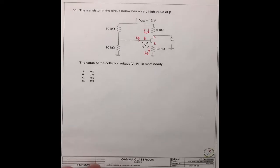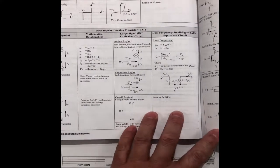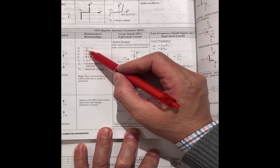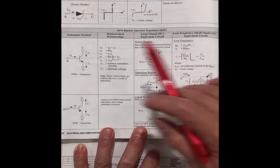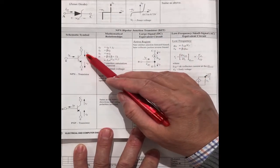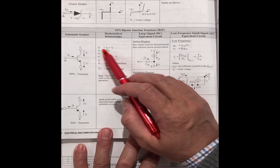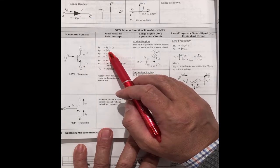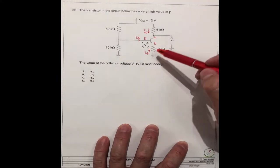You can see in the FE Handbook, page 210, it is described that IC is equal to beta times IB. IC is the collector current, IB is the base current. IC equals beta times IB. Because beta is very high, IB is very small.